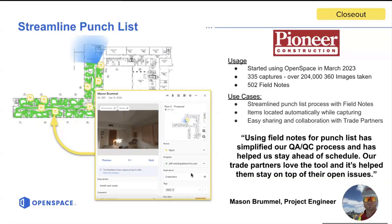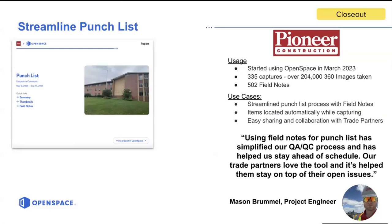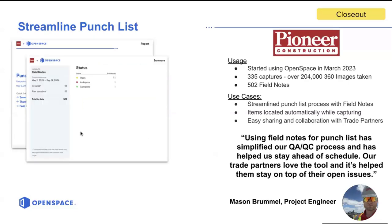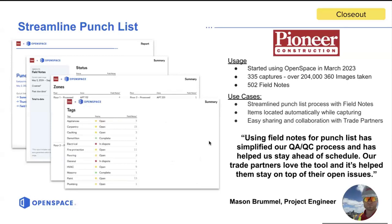In addition to working with subs through the assignee feature, the team also used PDF reports with the field notes. If your team prefers to manage punch list items through a PDF report versus giving full access to the project, that's another option. When you filter and find the field notes you'd like, you can generate PDF reports that include a cover photo, a breakdown of notes by status, and room-level granularity using zones — for example, apartment 112 has four open punch list items, apartment 114 has three. For trade-specific punch lists, you can assign notes by tag and see which trade has the most open items.